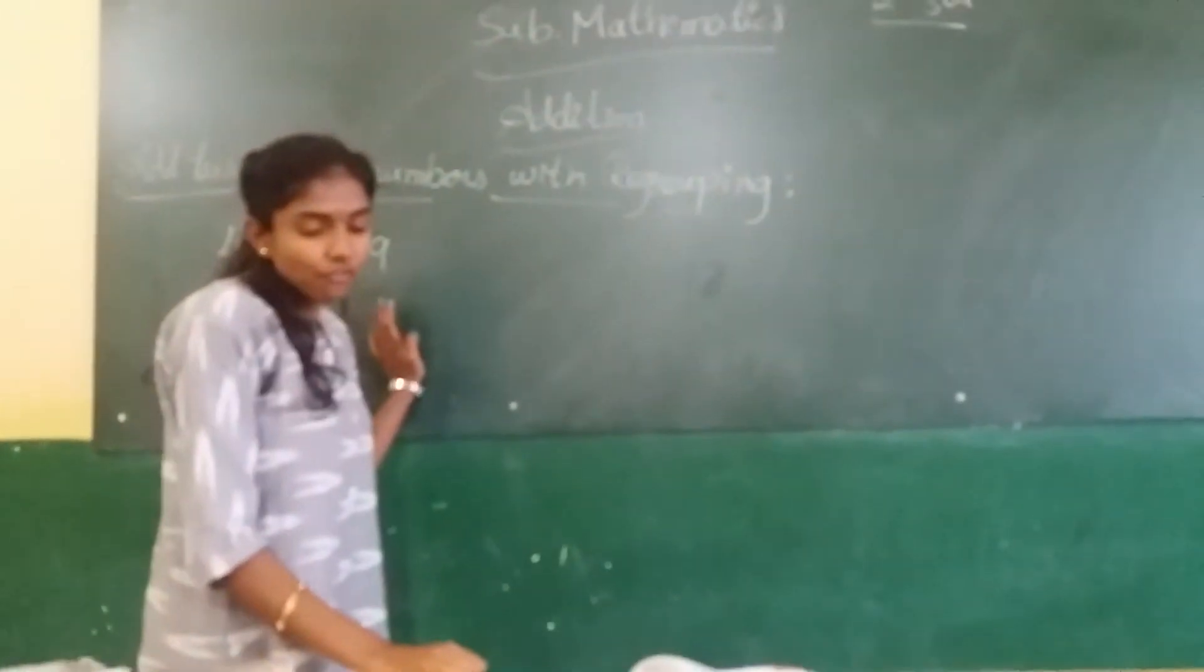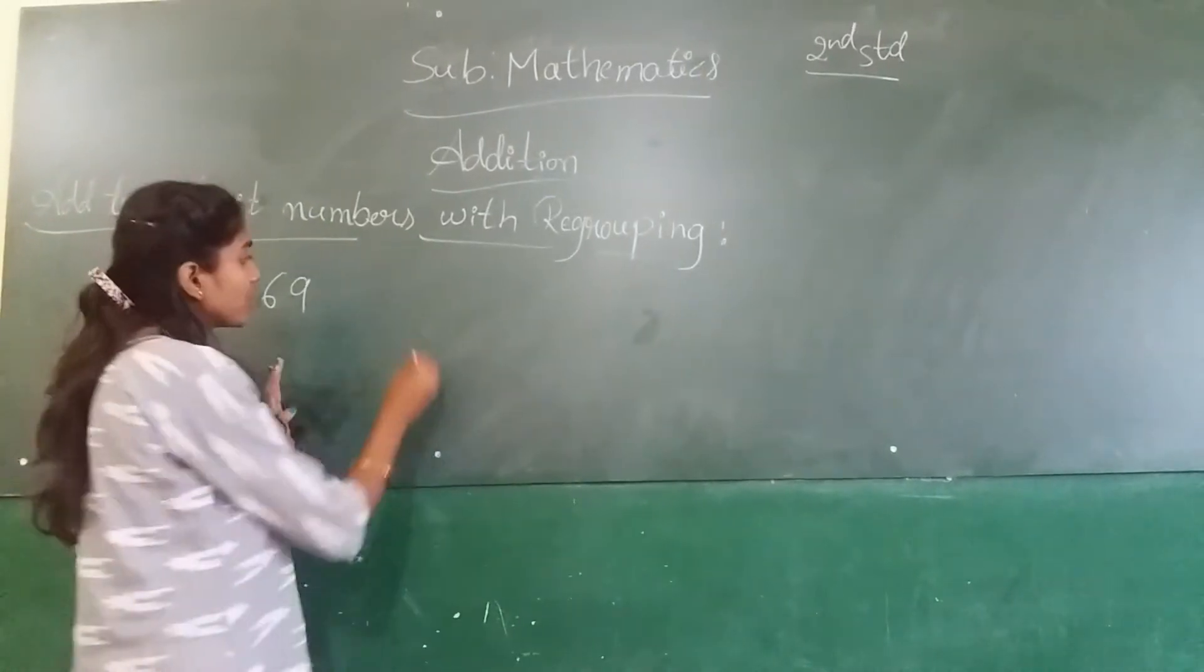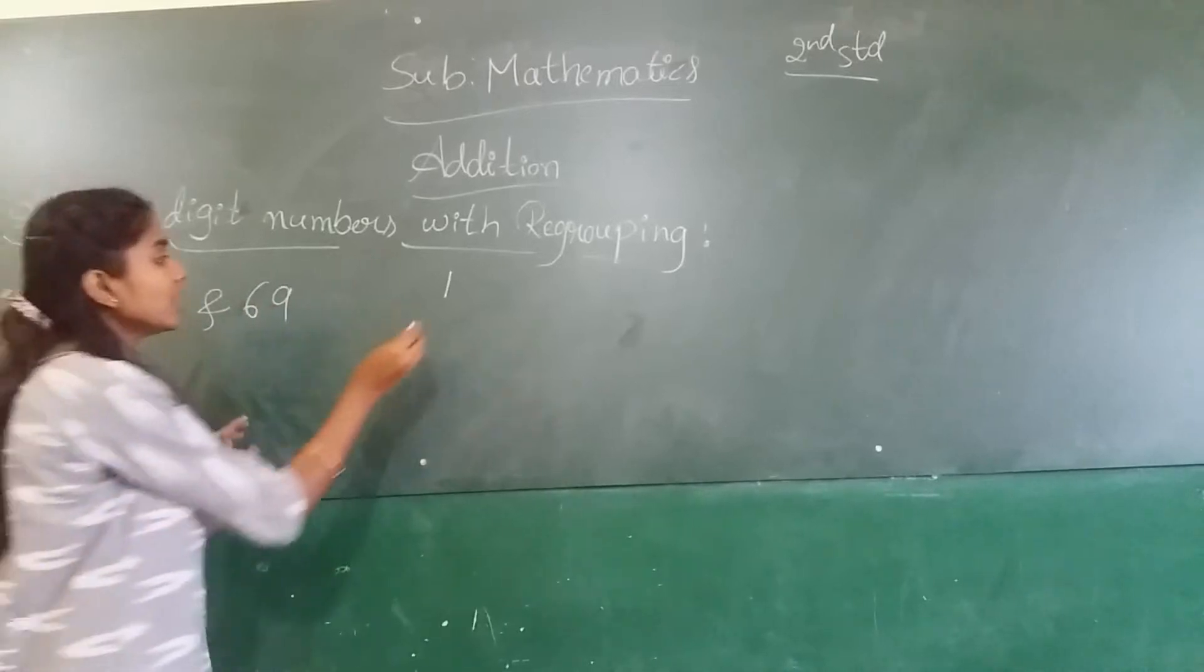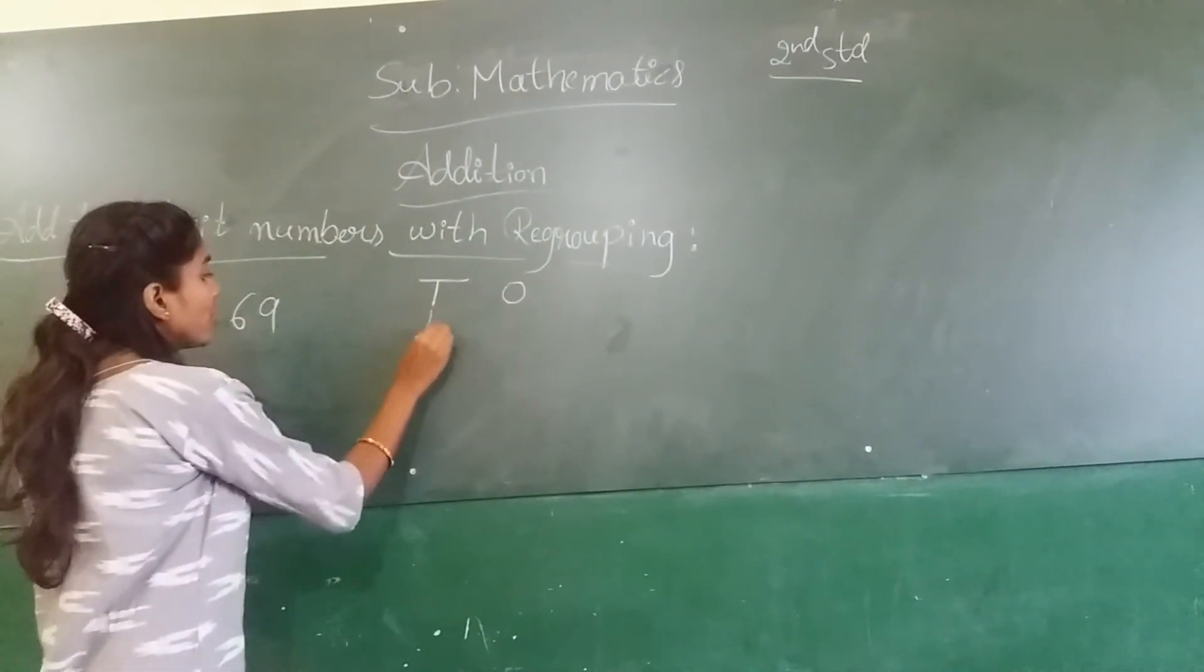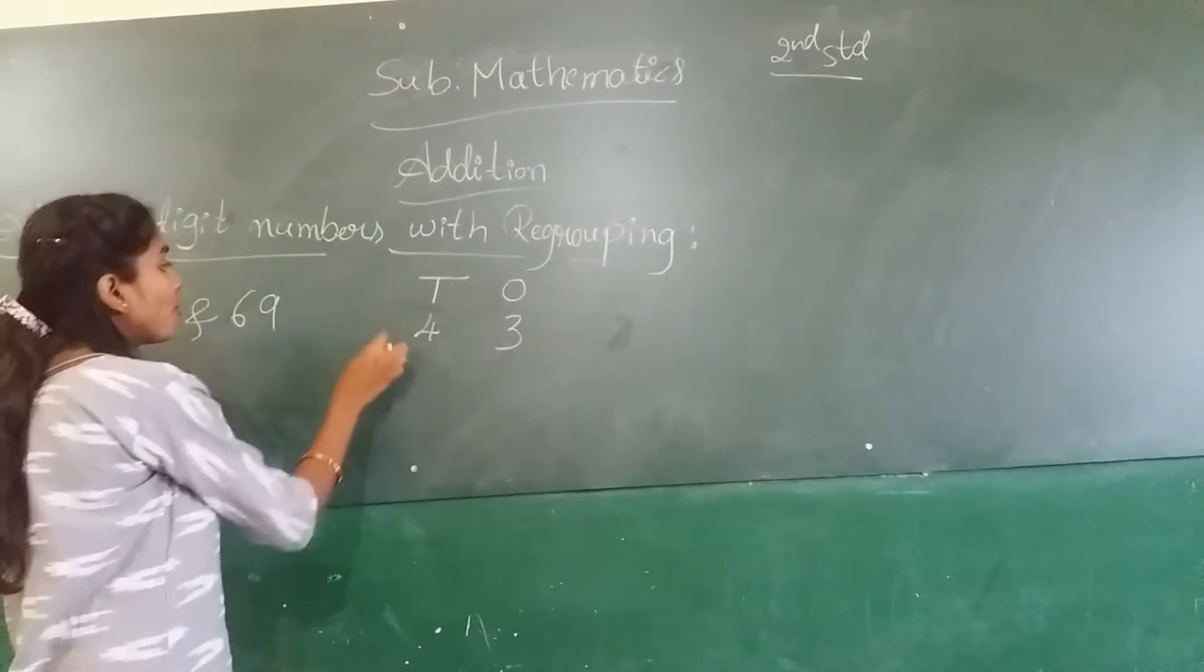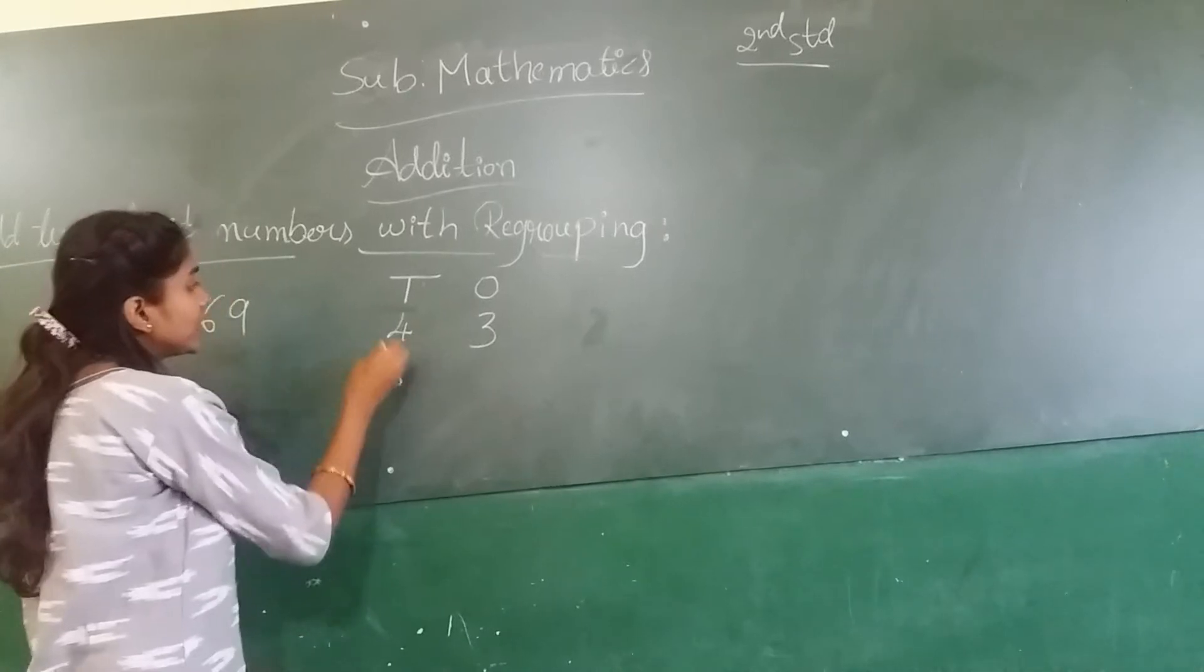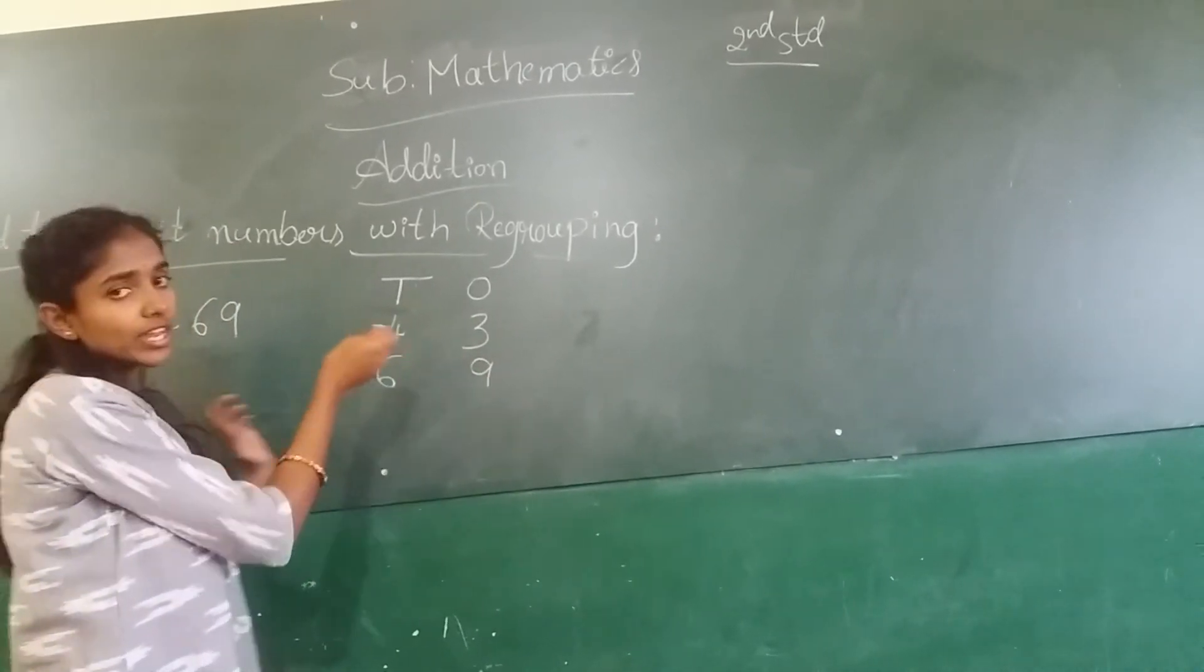Once column, first place the number of regrouping. Tens. Here are two digit numbers. Tens and ones. First two, 43. Four is in the tens column. Three is in the ones column. And six is in the tens column. Nine is in which column? Ones column.